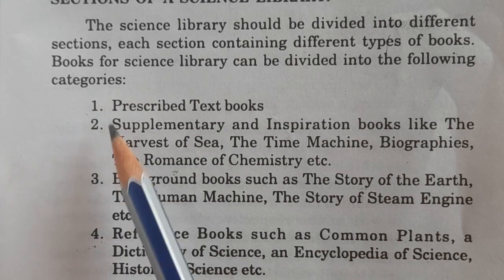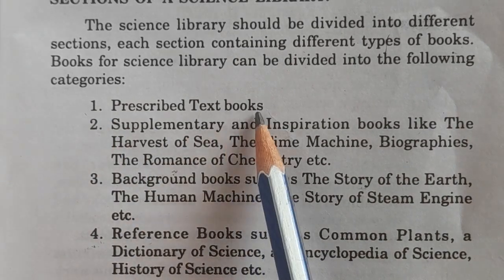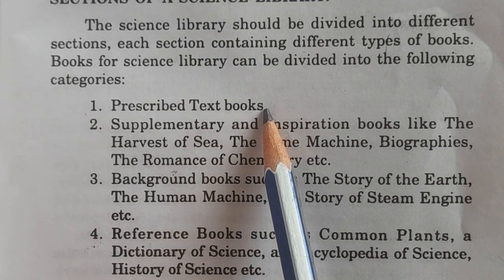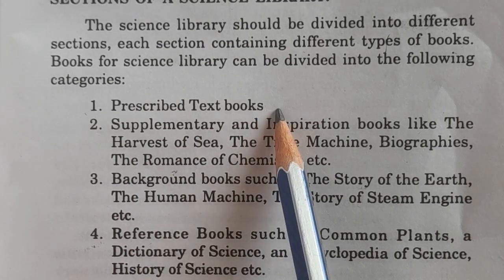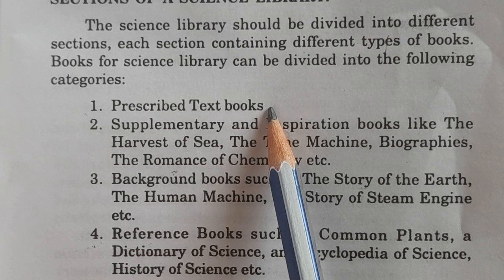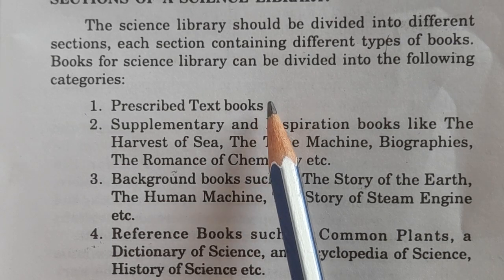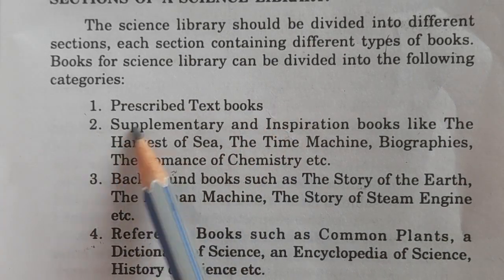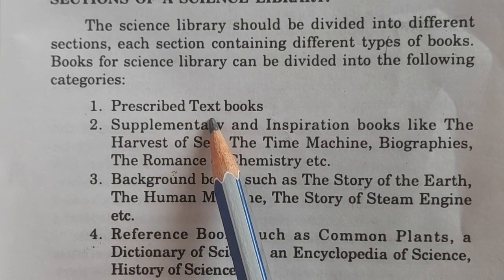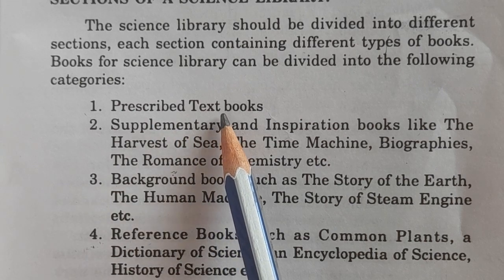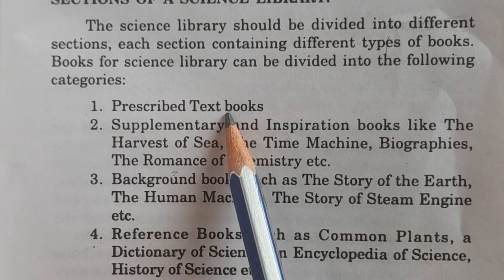Number one is prescribed textbooks — the textbooks prescribed by the university, board, or institution. Whether setting up a science library in a college or a school, the books prescribed by the board or institution form one dedicated section.